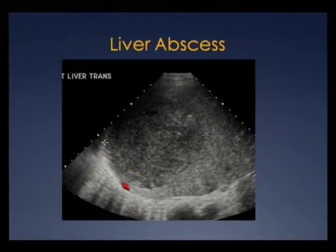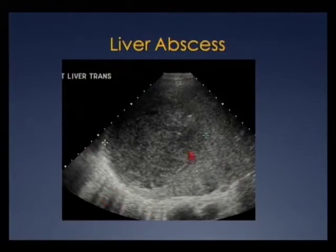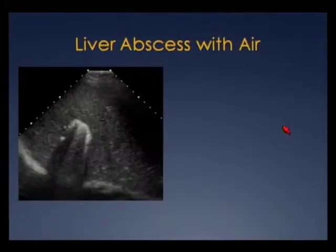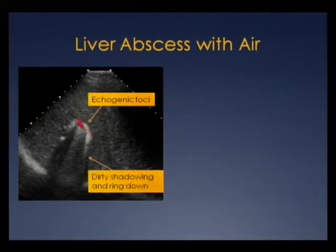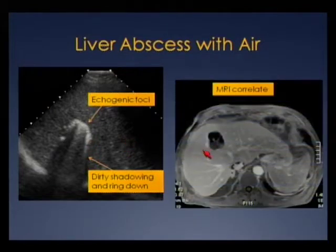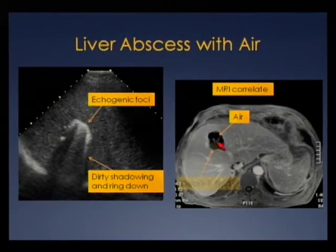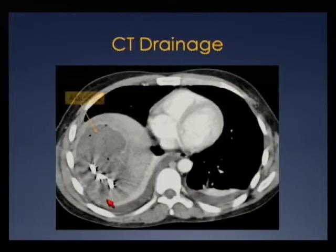Here's a large complex hypoechoic lesion in the right lobe with diffusely increased through-transmission and no Doppler signal — this was a liver abscess in a very sick patient. In another patient, we see multiple echogenic foci with ring-down and dirty shadowing in the right lobe — the hallmark of air. Air is echogenic with dirty shadowing, unlike the clean shadowing from stones, plus ring-down artifact. On MRI T1 post-contrast axial, areas of signal void correspond to air with a hypointense focus of debris and fluid, confirming the abscess.